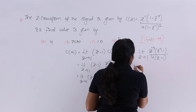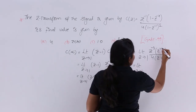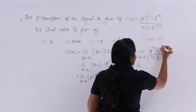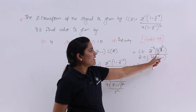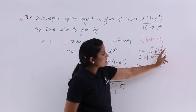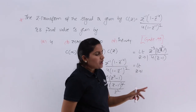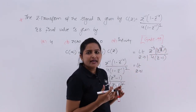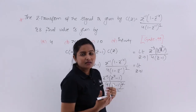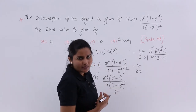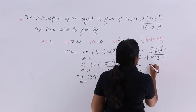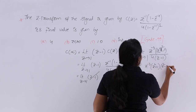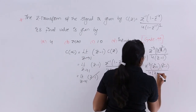I treat Z⁴ as (Z²)², so Z⁴ - 1 = (Z²)² - 1². Using the identity A² - B² = (A + B)(A - B), I write Z⁴ - 1 as (Z² + 1)(Z² - 1). Also, Z² - 1 = (Z + 1)(Z - 1). So the expression becomes: limit Z tending to 1 of Z⁻³ into (Z² + 1)(Z + 1)(Z - 1) divided by 4 into (Z - 1).